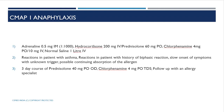Groups at risk of biphasic reactions include: patients with asthma, patients with a prior history of biphasic reaction, slow onset of symptoms with unknown trigger, and possible continuous absorption of the allergen. Discharge medications: three-day course of prednisolone 40 mg orally once daily, chlorphenamine 4 mg orally three times a day for three days, with follow-up with an allergy specialist.